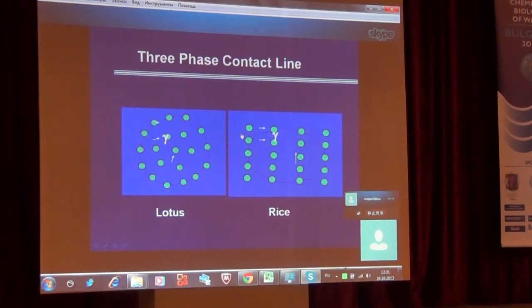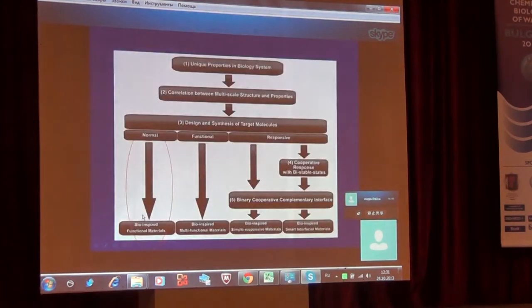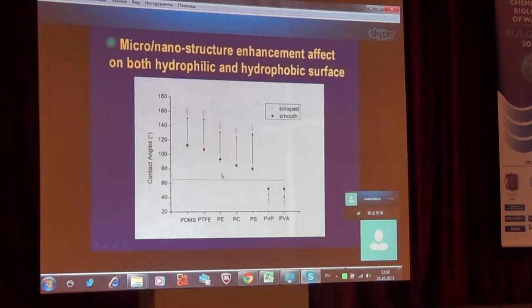After we understand the principle, it means the effect of micro-nanostructure and low-surface-energy material is key for super-hydrophobic products. We developed a concept of roughness enhancement. We find the transition point at 65 degrees. After 65 degrees, the roughness enhancement will enhance it to super-hydrophobic. Lower than 65 degrees, the surface will enhance to hydrophilic, super-hydrophilic. This 65 is a new limitation between hydrophobic and hydrophilic.